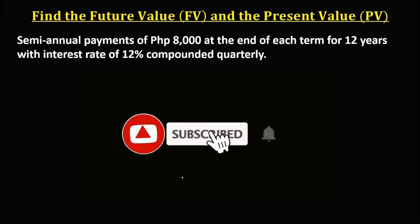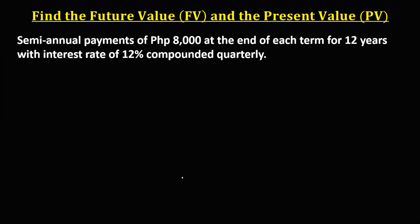Welcome to MathStorya. Let's work on this problem: finding the future value and the present value. We have semi-annual payments of 8,000 pesos at the end of each term for 12 years with an interest rate of 12% compounded quarterly. Since the payment interval is not equal to the compounding period, this problem is a general annuity.